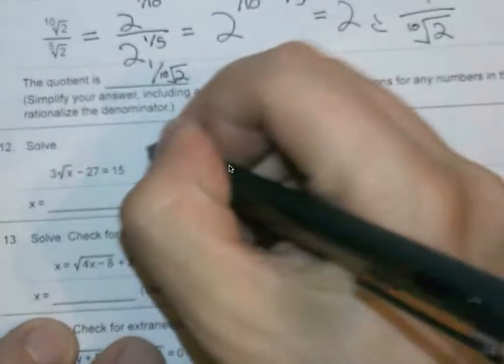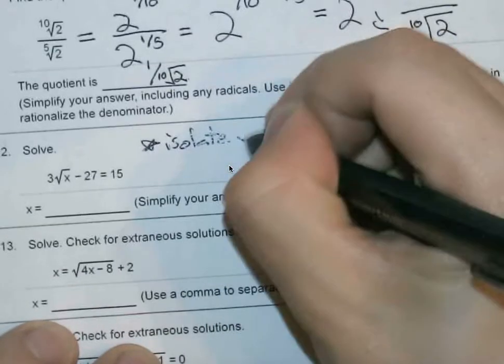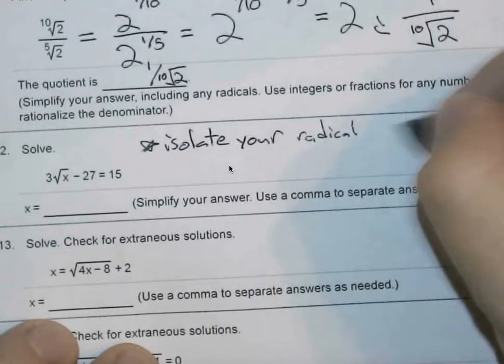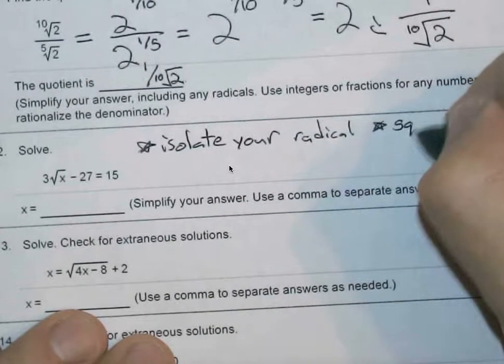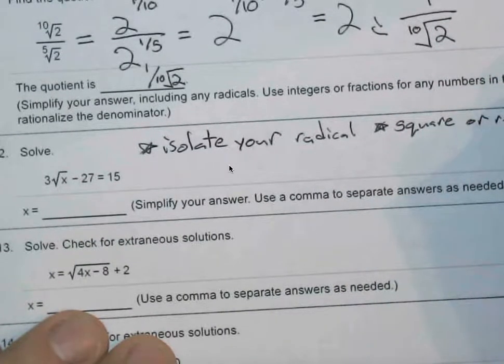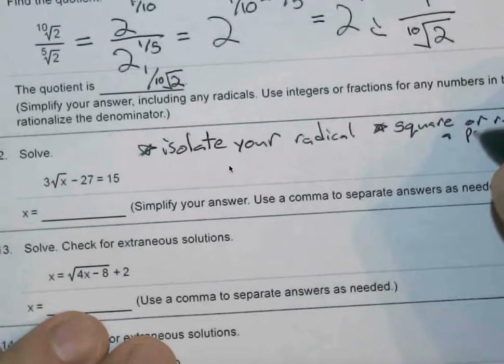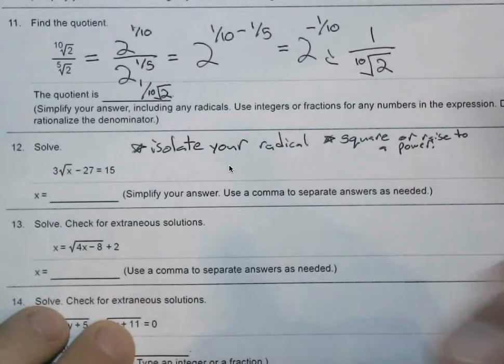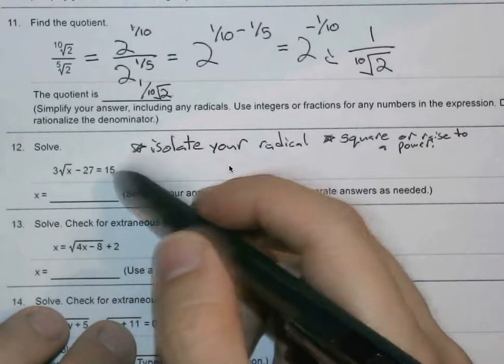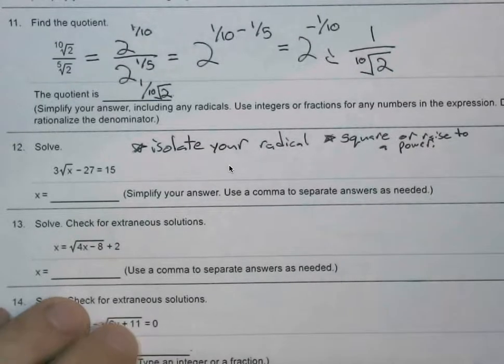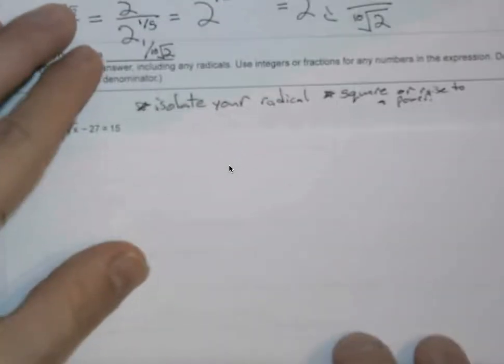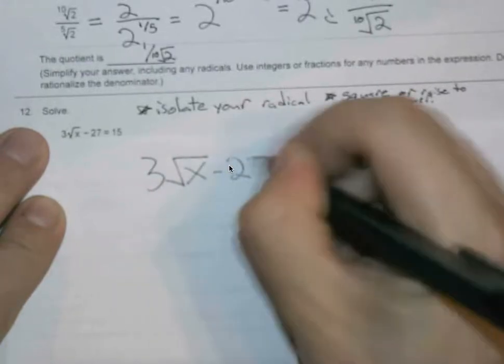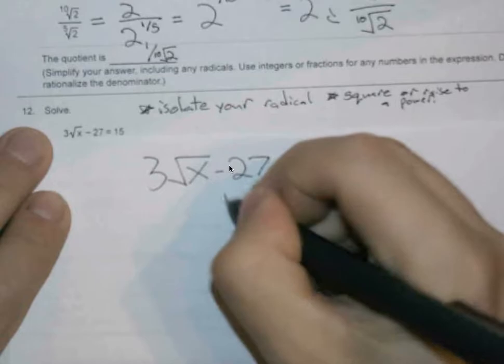We're solving, so a good rule of thumb for this: isolate your radical first using all of the algebra skills that we've seen this year. We then square or raise to a certain power, and then we isolate x from there. These are just two of the steps. If you check the videos, there are more of them. So we have 3 square root of x minus 27 equals 15. I'm going to rewrite this here, so you get to see all the work on this one. Lucky you. So if we have 3 square root of x minus 27 equals 15, try and isolate the radical. So let's get rid of this 27.